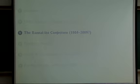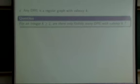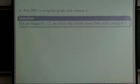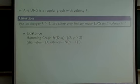Now let me introduce the Bannai-Ito conjecture and its background. As mentioned, a distance-regular graph is a regular graph with degree k. A natural question is: for any given positive integer k, are there only finitely many or infinitely many distance-regular graphs with that degree? First, the existence problem: for any positive integer, does there exist a distance-regular graph with given valency? The answer is yes — the Hamming graph H(D,Q) has valency D(Q-1), so for any valency we can always construct one.